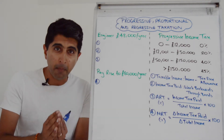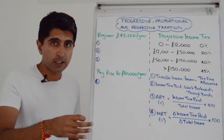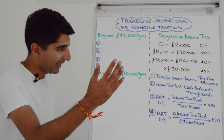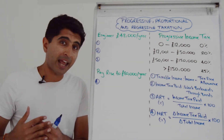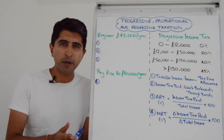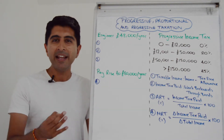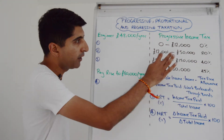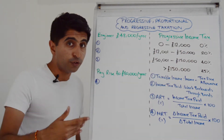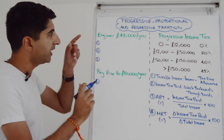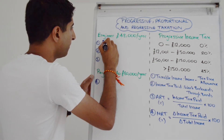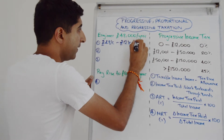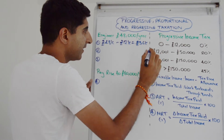Now let's look at some key calculations, using an engineer who is initially earning £48,000 a year. The first calculation is taxable income — of someone's annual income, how much is subject to income tax? The equation is: annual income minus the tax-free allowance. For the engineer, that's £48,000 minus the £12,000 tax-free allowance, giving taxable income of £36,000.